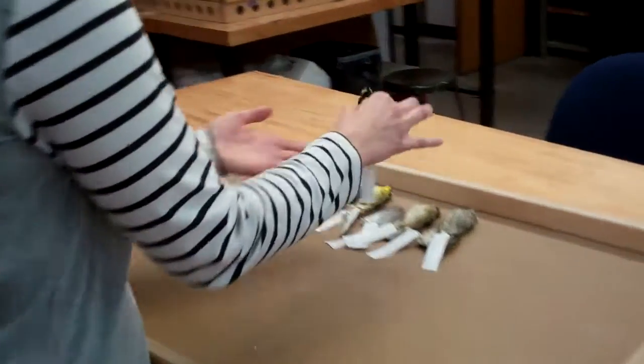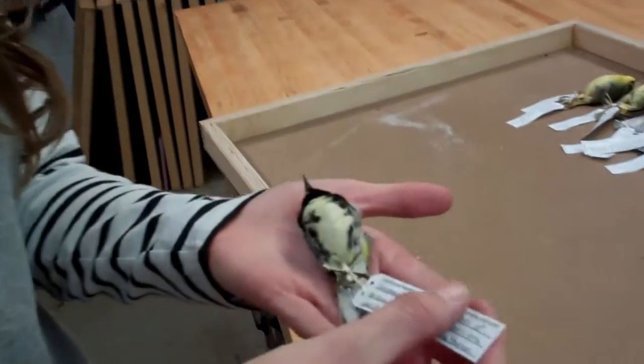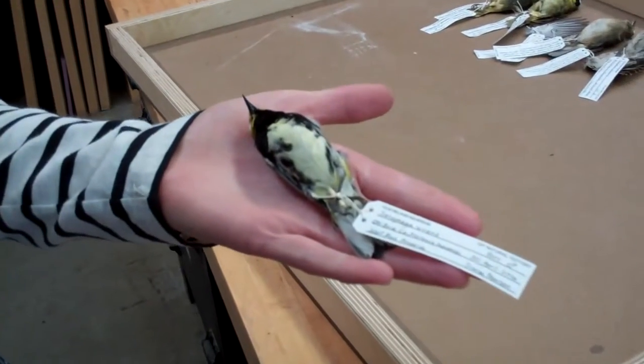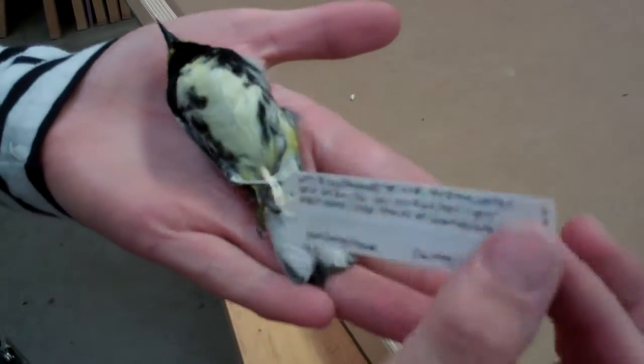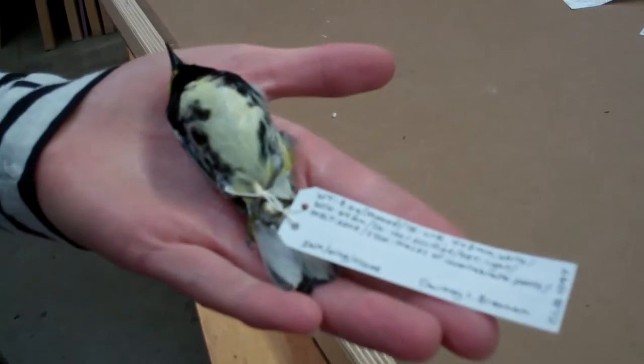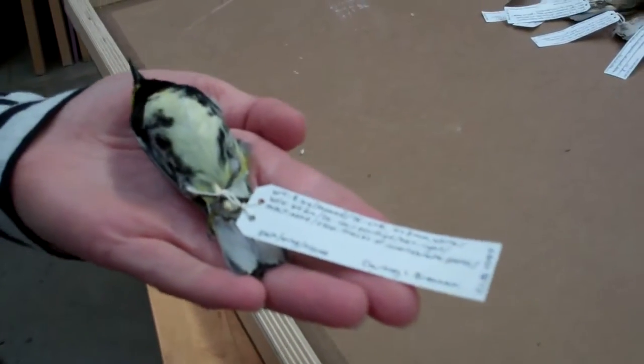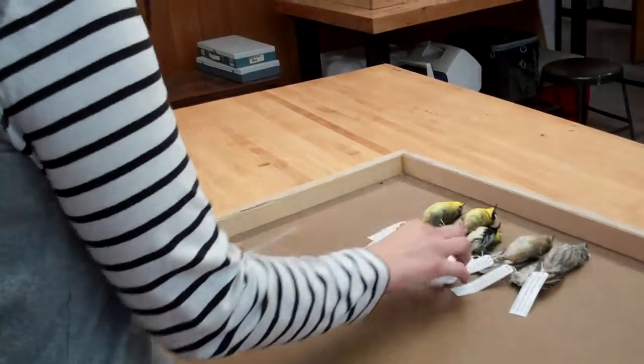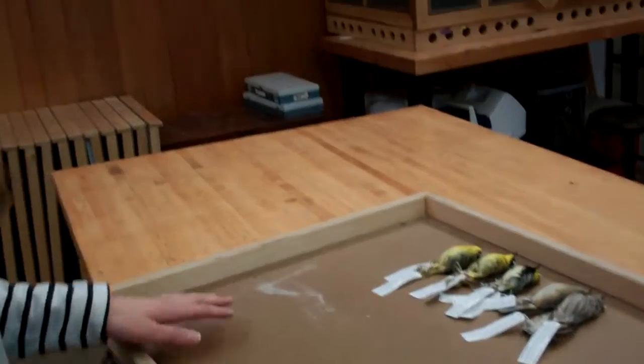Once the skin is fully dried, all of the information that our volunteers jotted down while preparing the bird is transcribed onto these data tags, and these data tags stay with the specimen forever. This information gets cataloged and digitized and is associated with this bird for the rest of its time here at the museum.